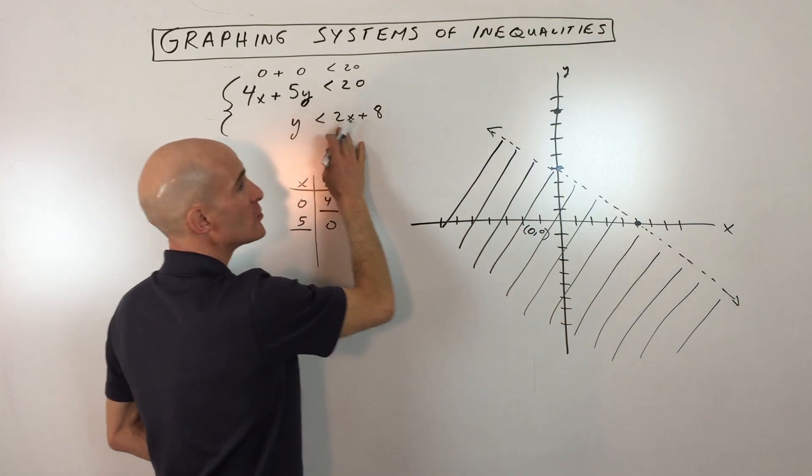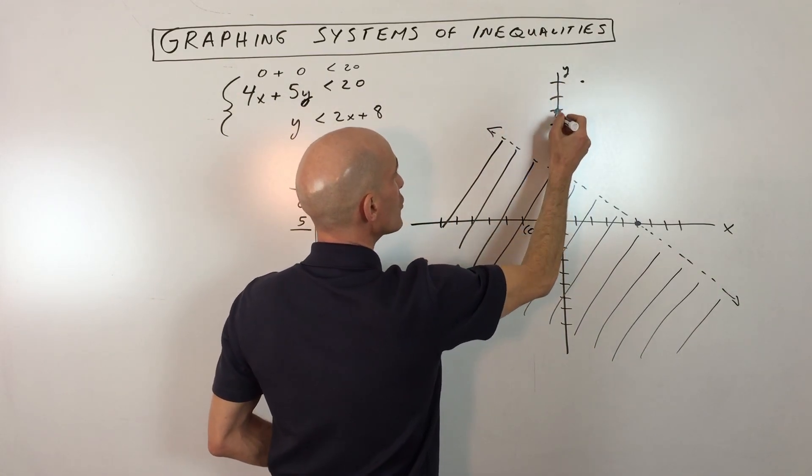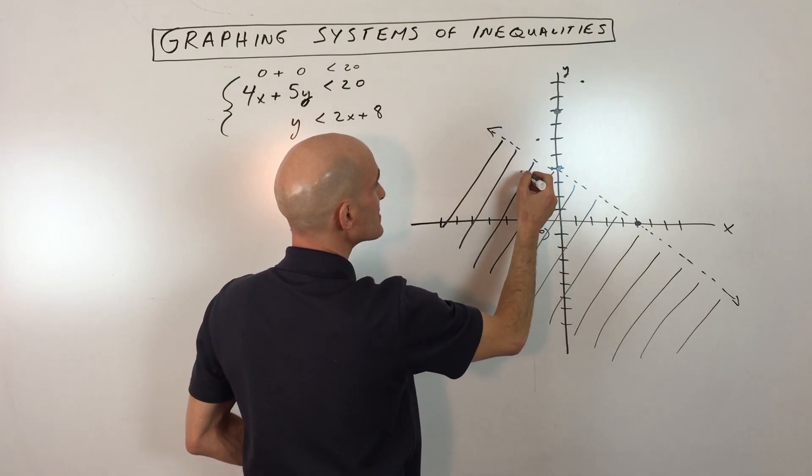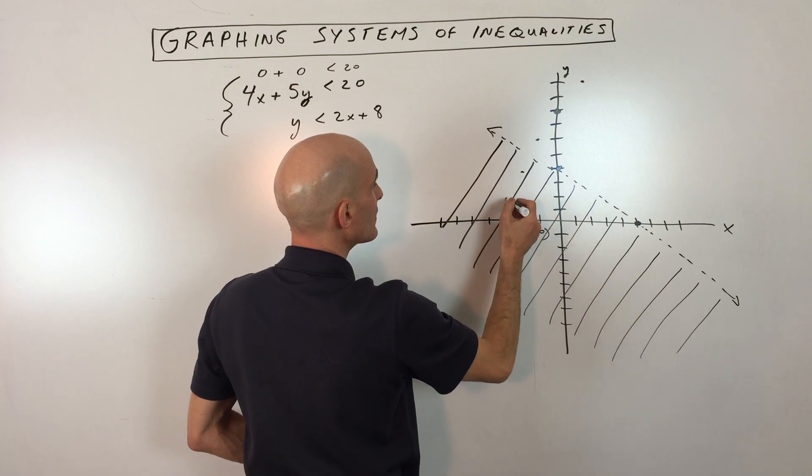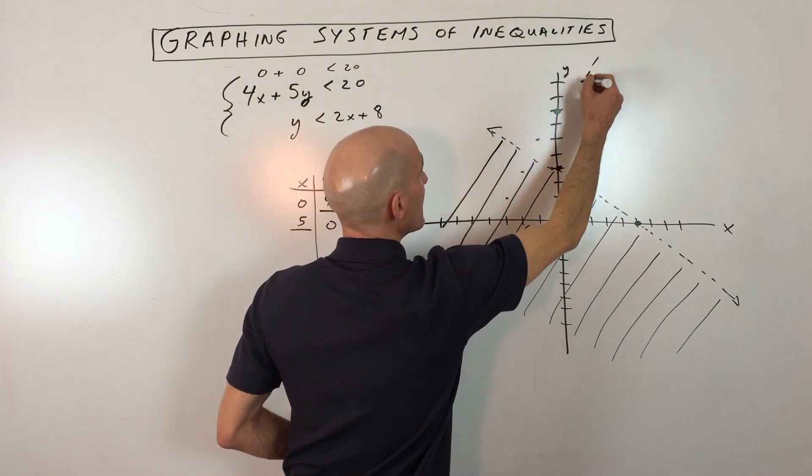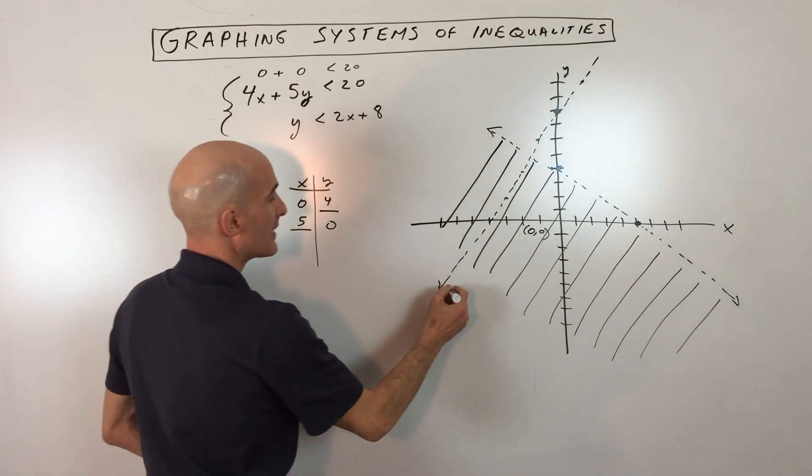And it has a slope of 2. So we're going to go up 2 over 1. Or it could go down 2. That's negative 2. Left 1. That's negative 1. And you can repeat that process a few times like so. And you can see this is less than but not equal to as well. So this is going to be a dashed or a dotted line like so. And it keeps going.